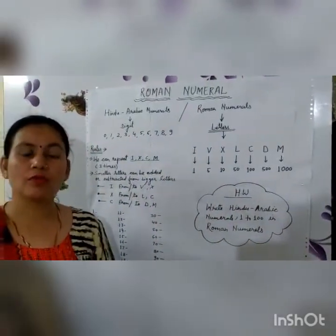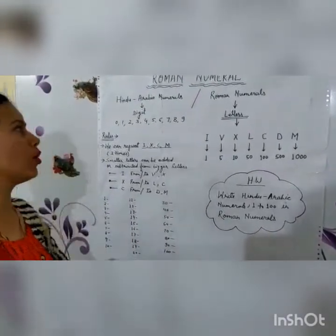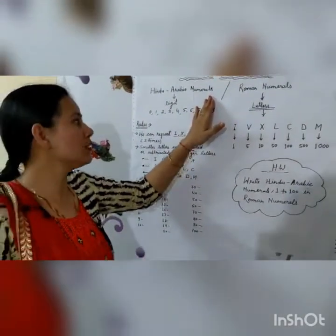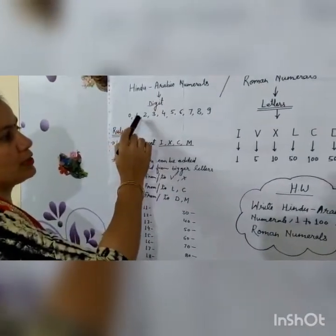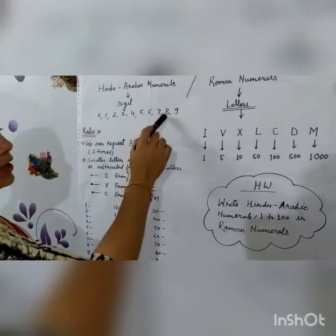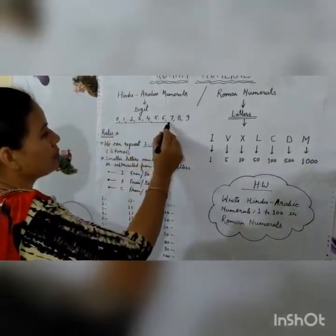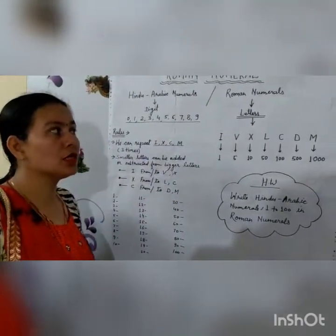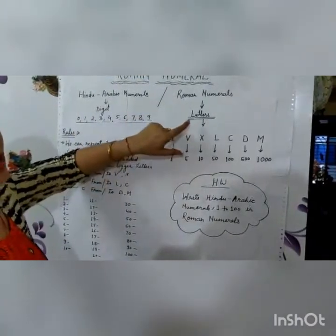Children, you know which numbers we use to write. These numbers are called the Hindu-Arabic numerals and we form these numbers by using the digits 0, 1, 2, 3, 4, 5, 6, 7, 8, and 9. By using only these digits, we make the numbers. But in Roman numerals, we don't use these digits — we use letters.